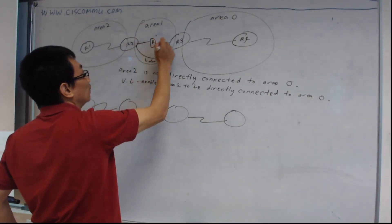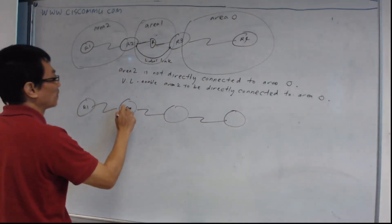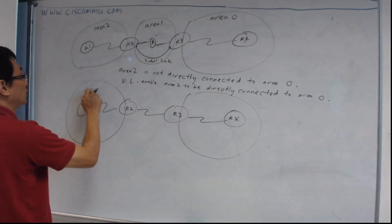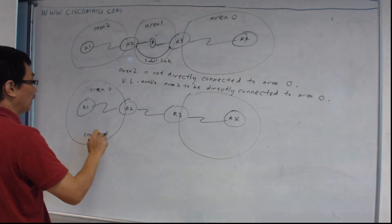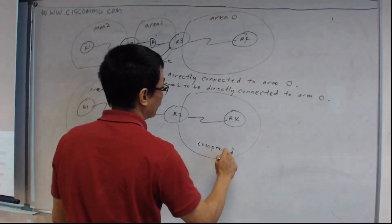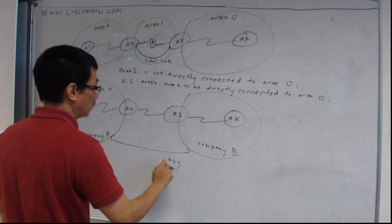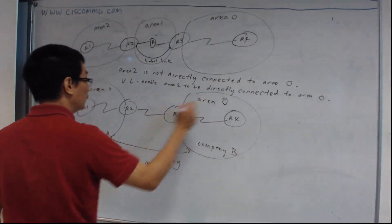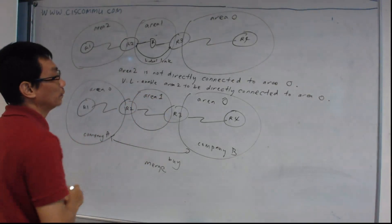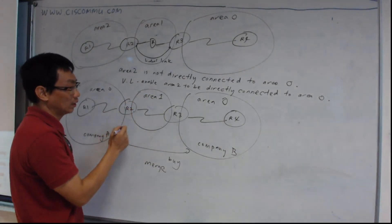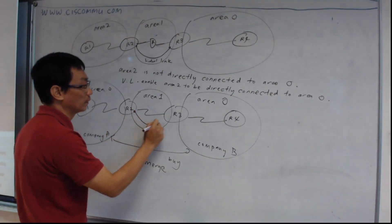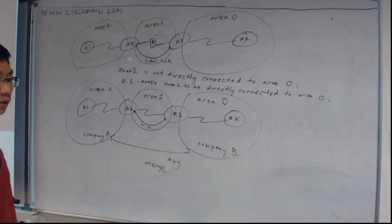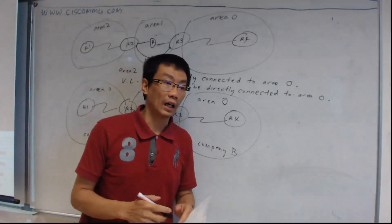Bear in mind you might have multiple routers inside this transit area as well. Another example is when you have two area 0s — for instance, company A buys over company B and they merge, so you end up with two backbone areas. You cannot have two backbones, so you configure a virtual link from one area 0 to the other so that the backbone is directly connected.